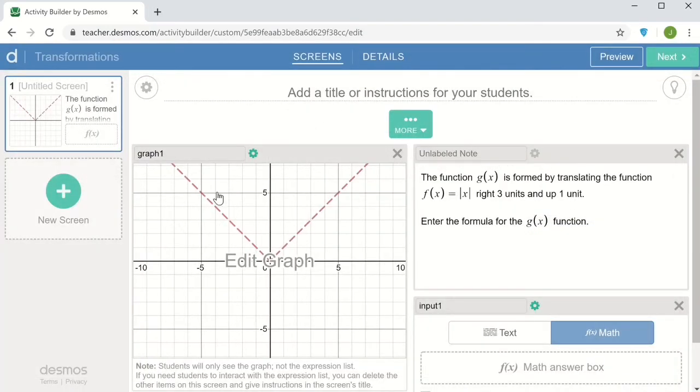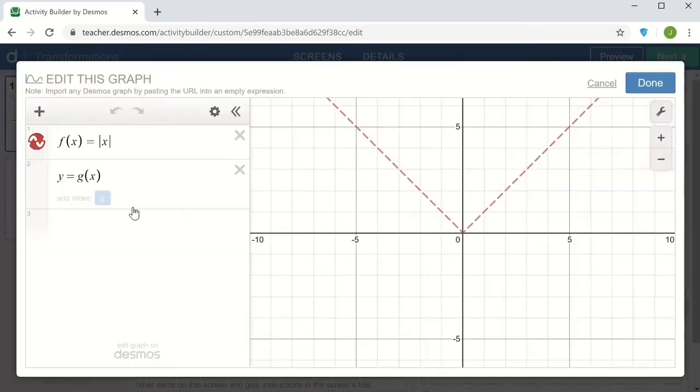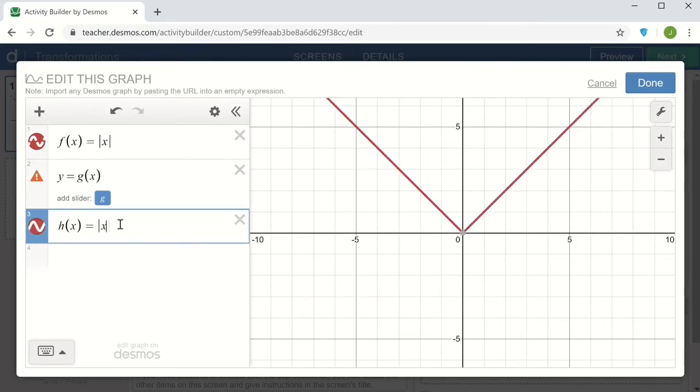And now I'd like to create an automated check on the student's input. So I'm going to go to the graph and enter the formula that I would want the students to enter. I'm going to call it h of x and the formula should be the absolute value of x minus 3 plus 1. I don't want that to actually appear on the graph, but I'm going to use it to compare with the g of x function. And so to make that comparison, I'm going to create some numbers.